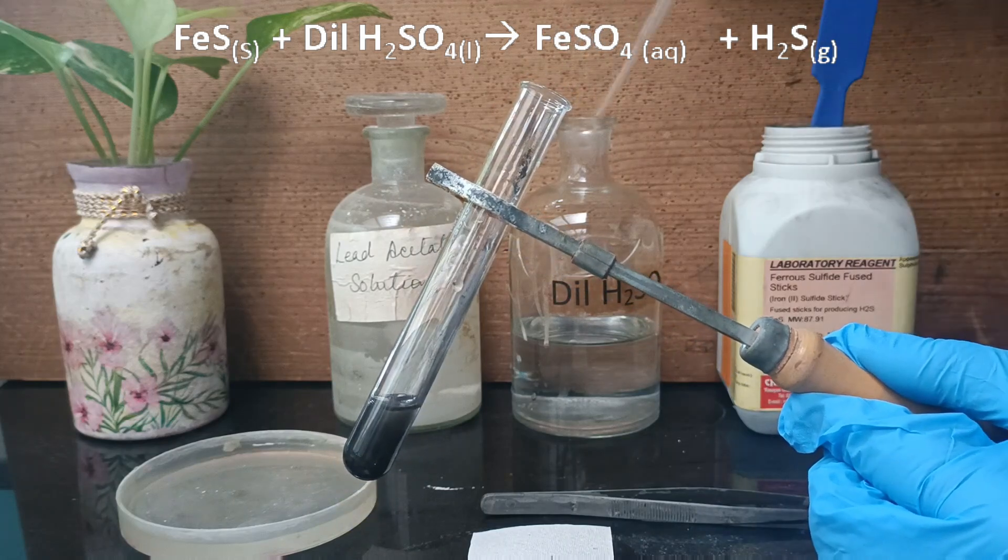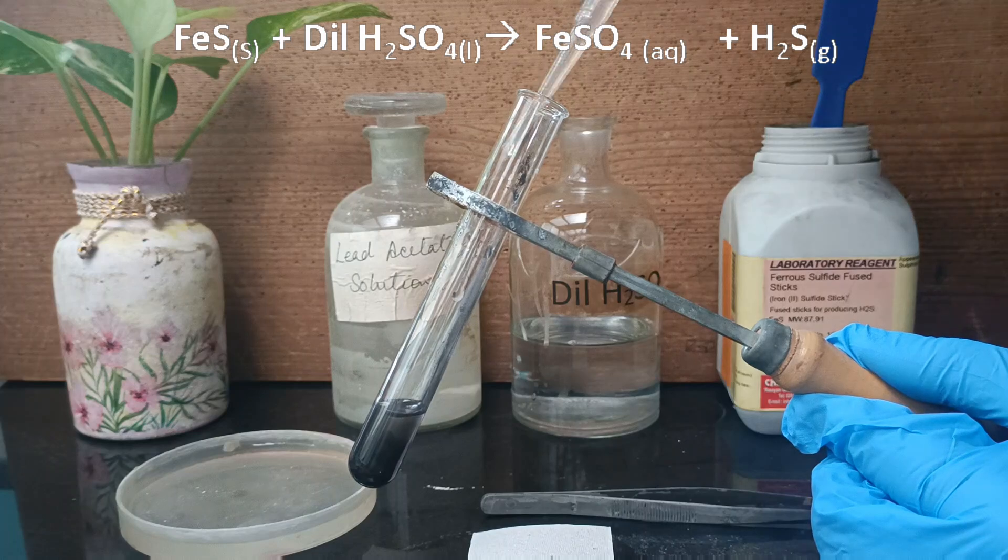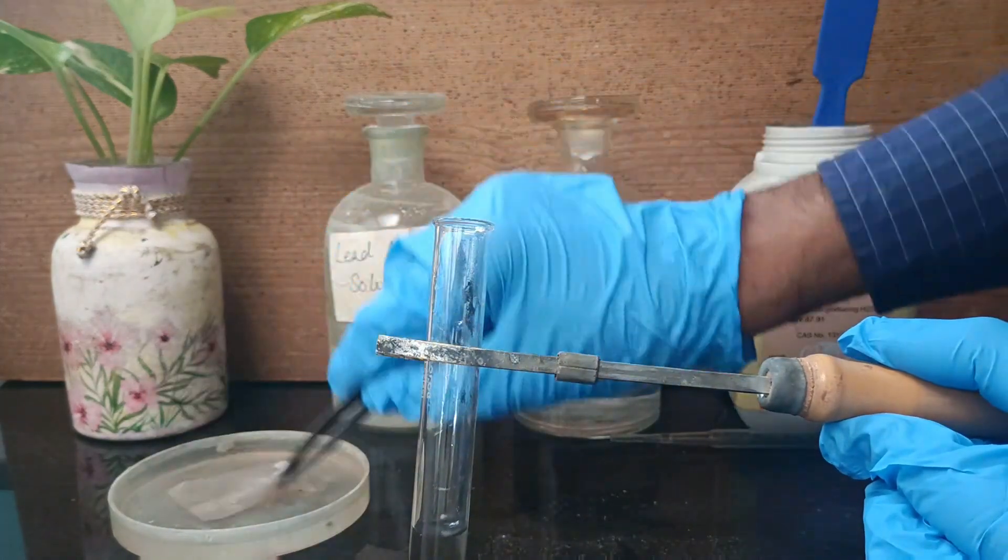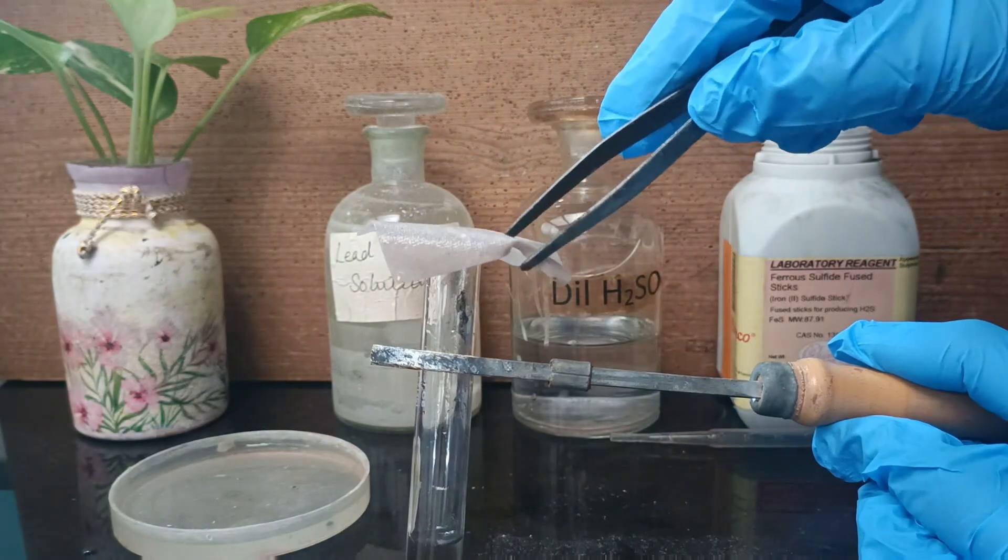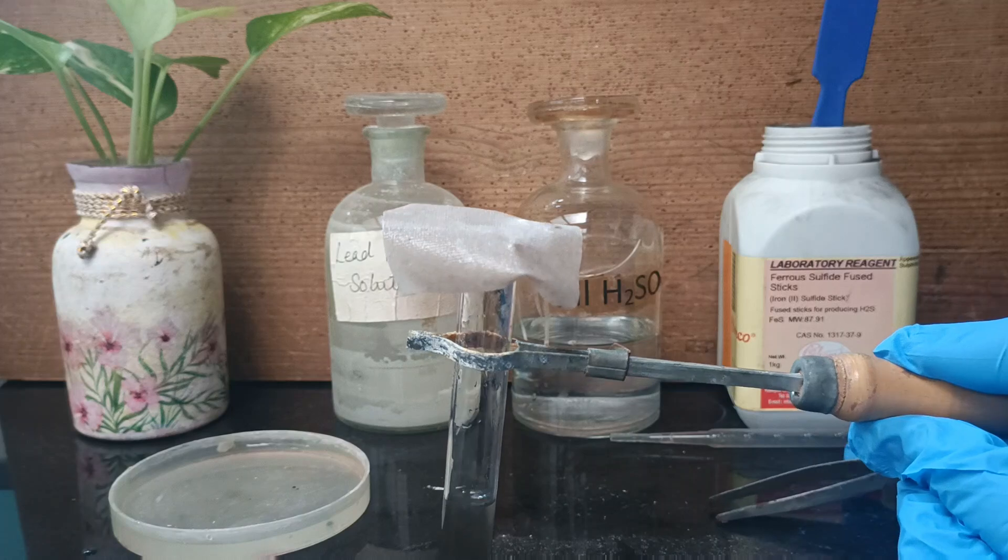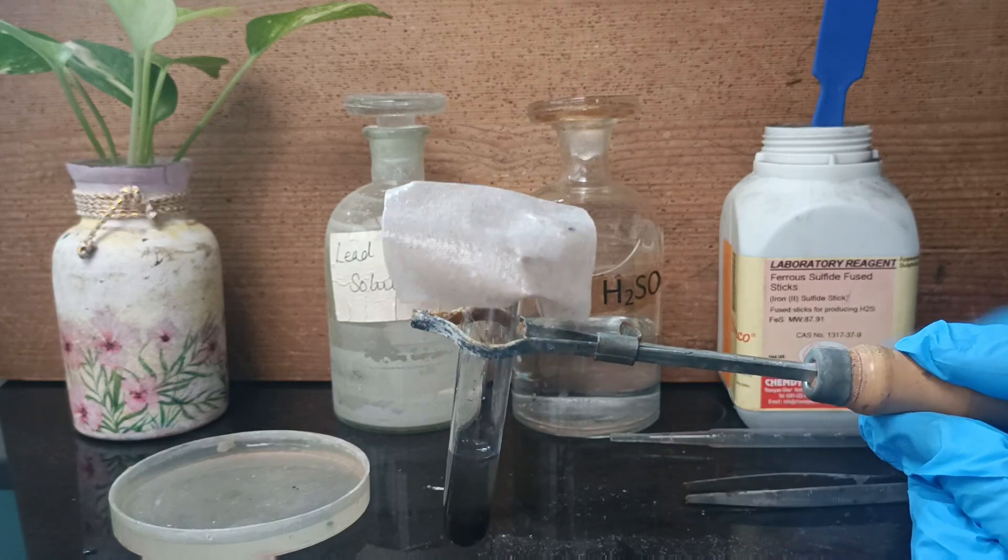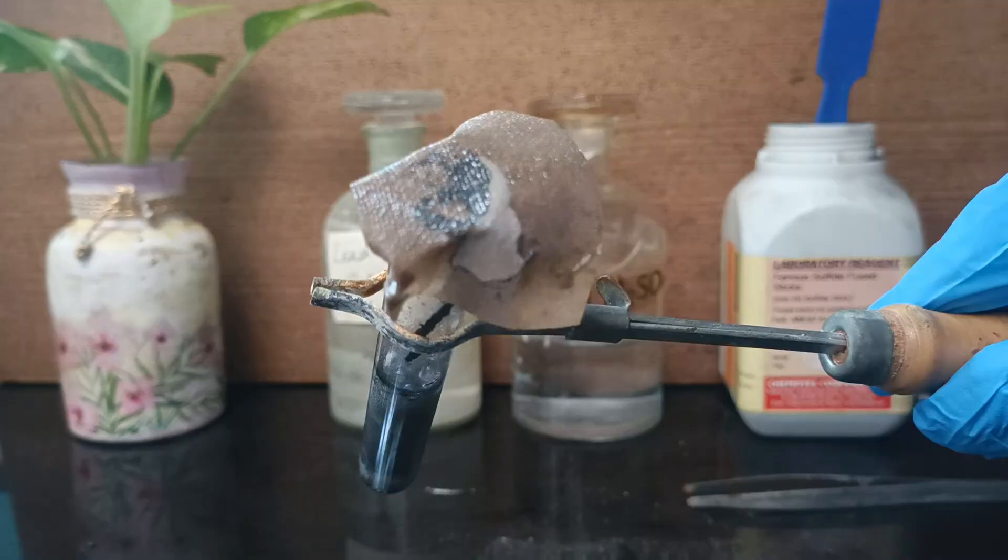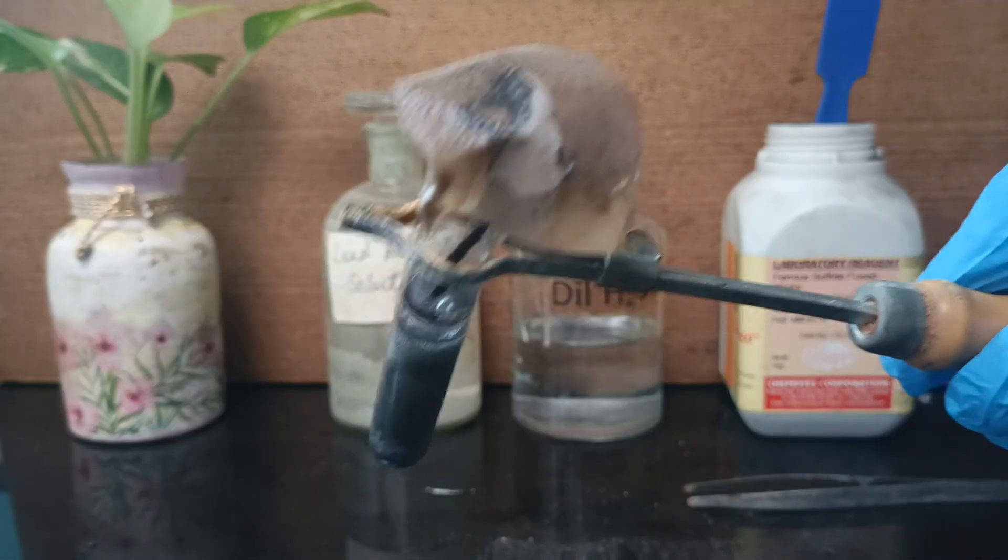Hydrogen sulfide has a rotten egg smell. We will dip the filter paper in the lead acetate solution and place the paper gently over the open mouth of the test tube.